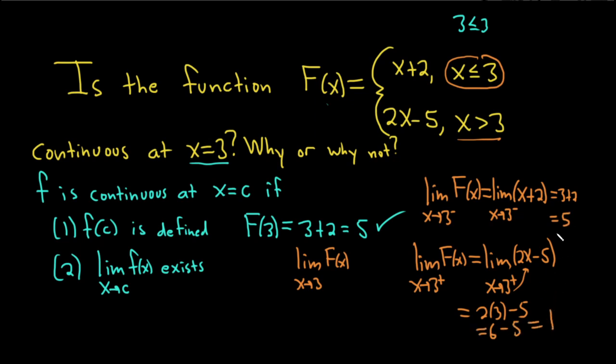So we get 1 this time. But look, these aren't the same, right? So the one-sided limits aren't the same. This means that this limit does not exist. So the answer is no. It's not continuous. And it's because, bc means because, being lazy, because this limit does not exist. So the limit as x approaches 3 does not exist.